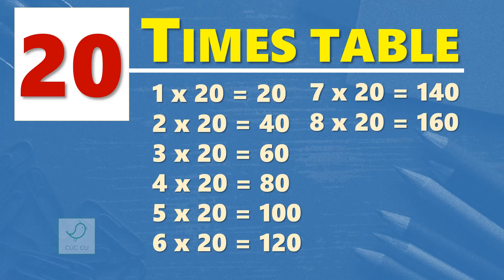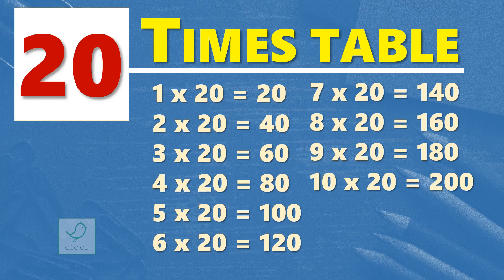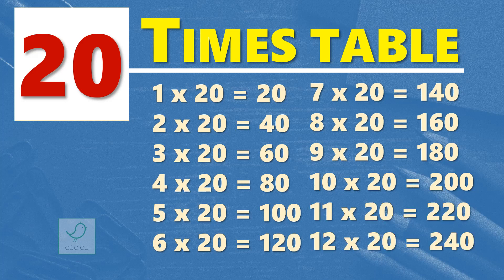9 times 20 are 180. 10 times 20 are 200. 11 times 20 are 220. 12 times 20 are 240. One more time.